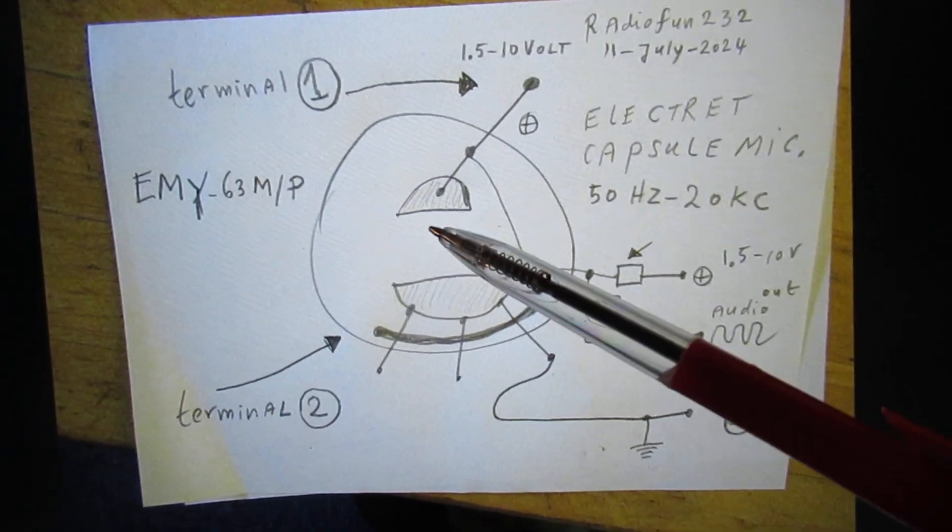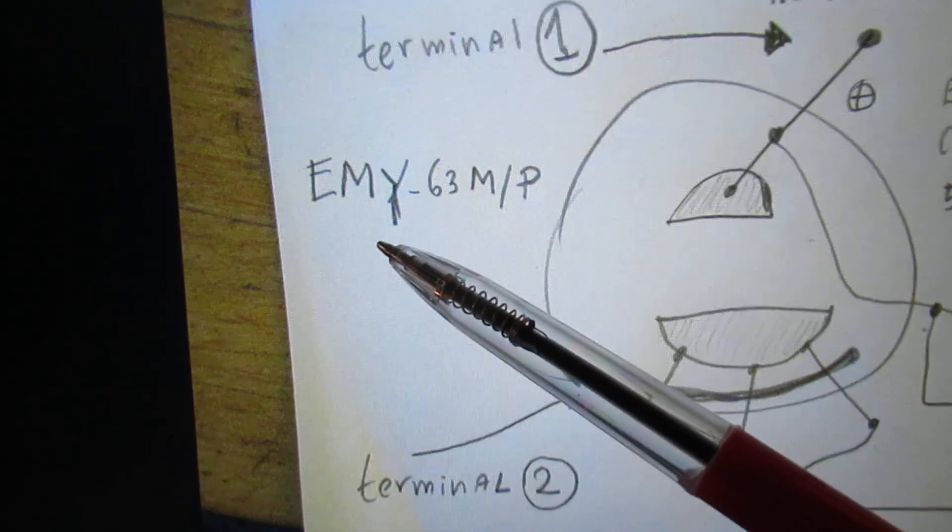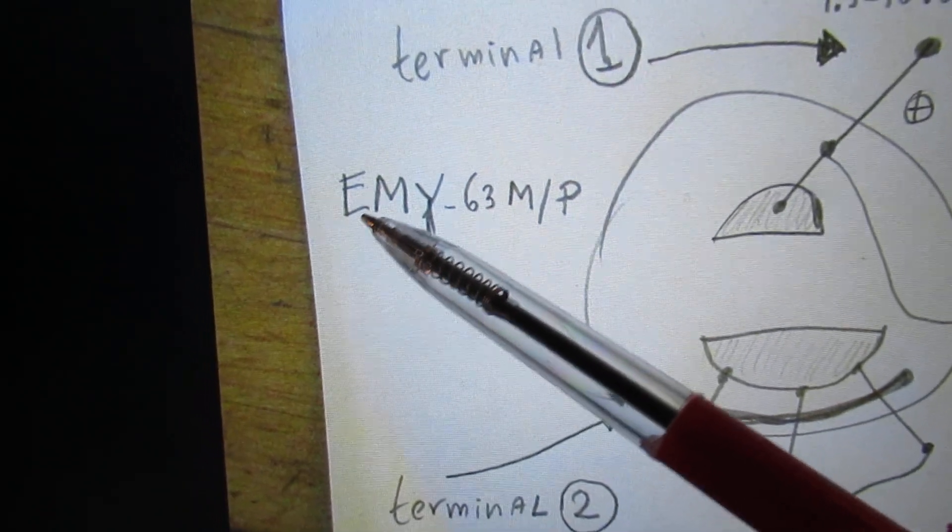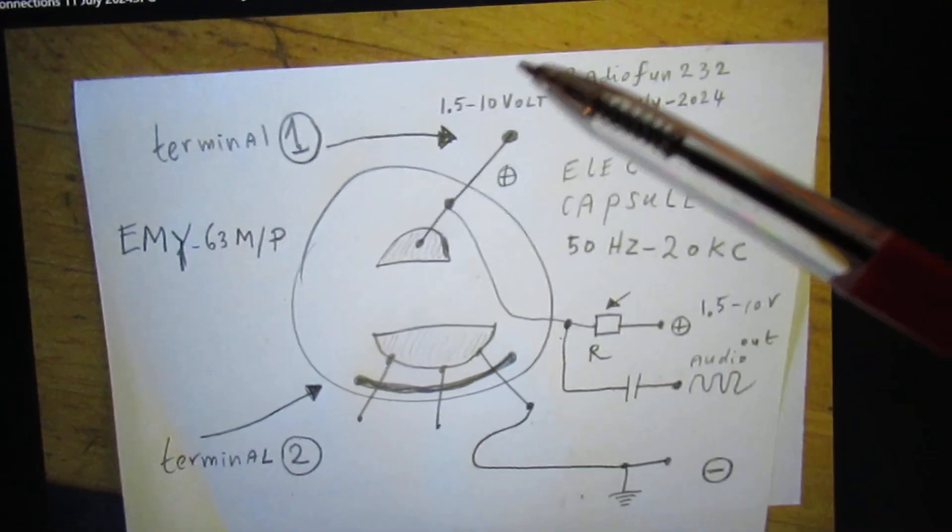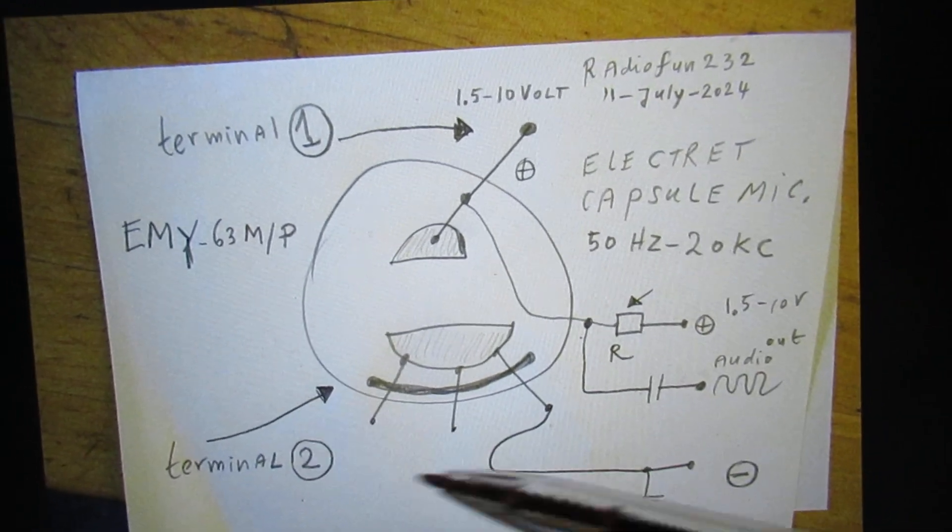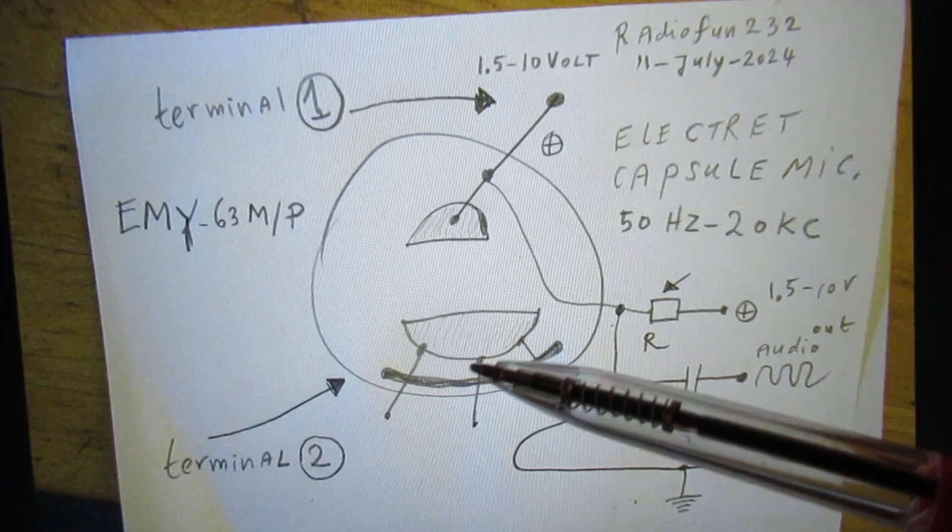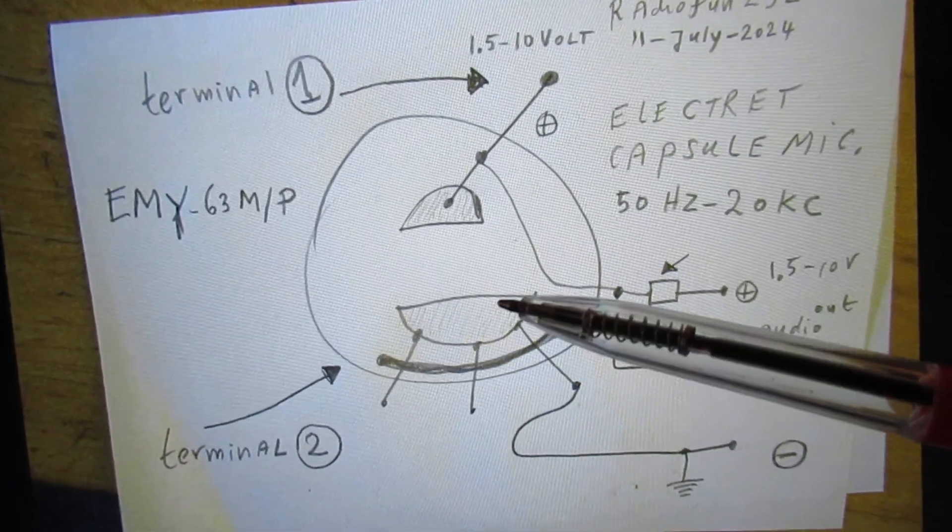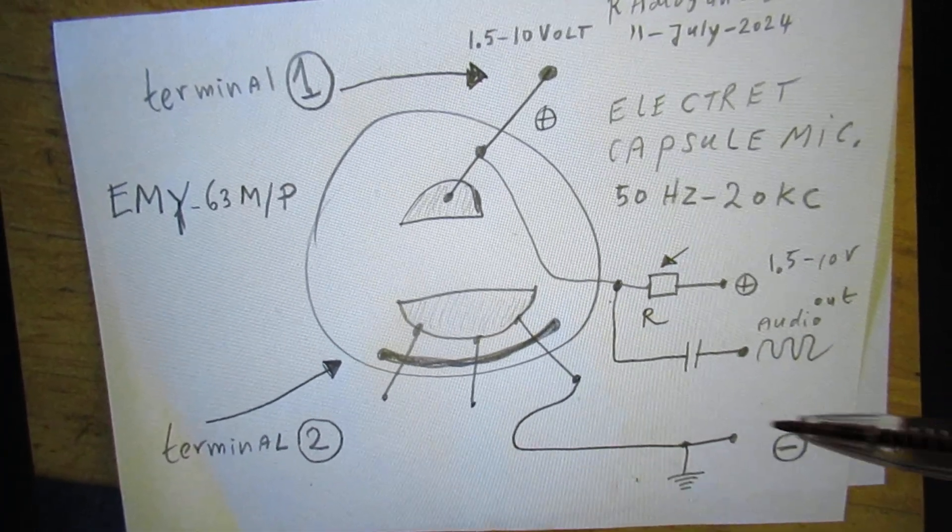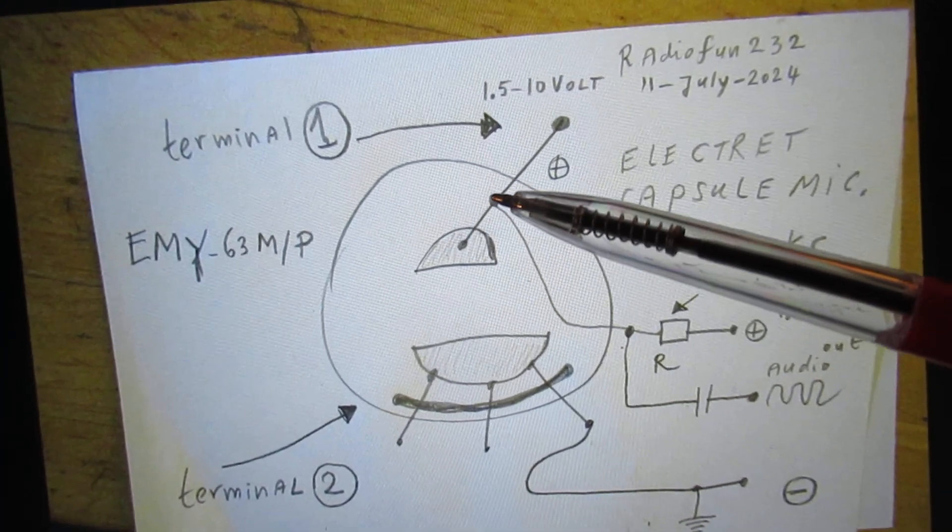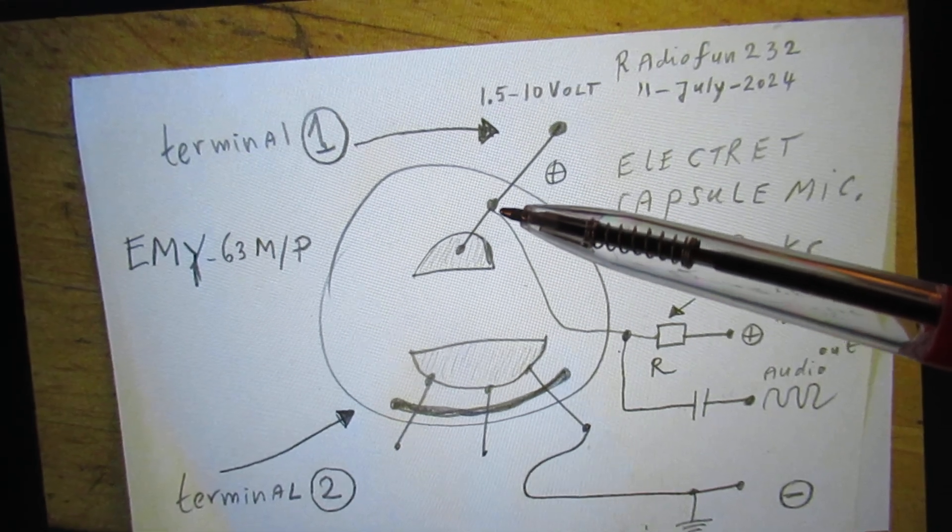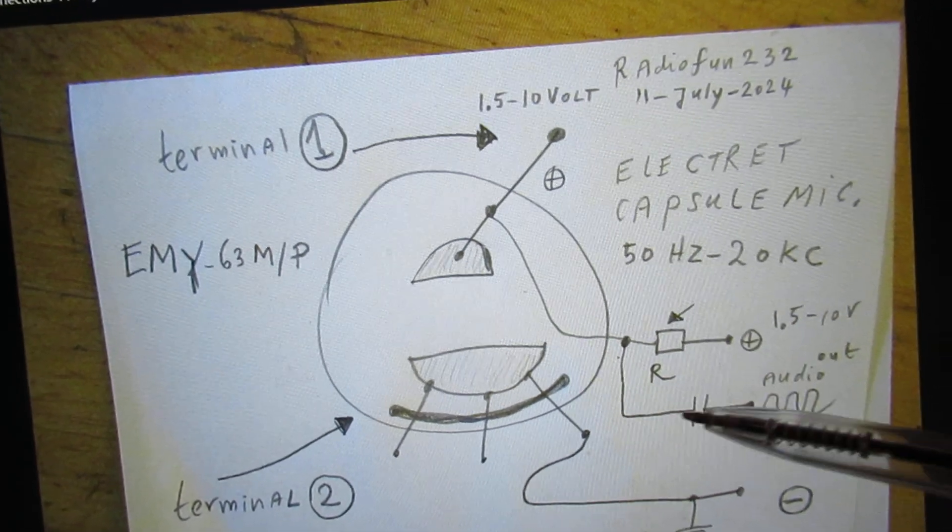Here is that capsule again. It has now the name EMI63MP, but in general all these capsules look a little bit the same. There's one electrode that must be connected to the minus, the mass. Here is the electrode out of which we take the audio signal via a capacitor here.